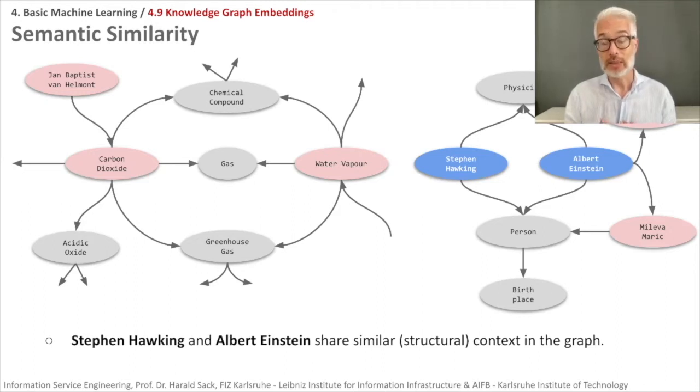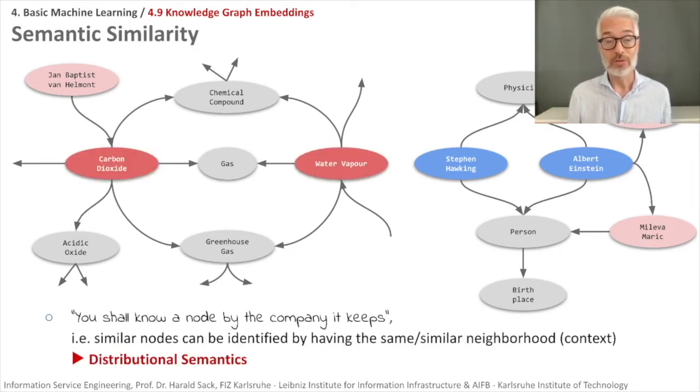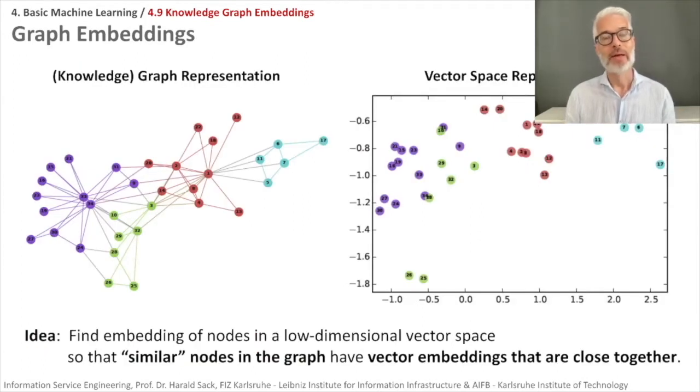You see, we can construct from the given context vectors. This is exactly the same principle as you already know from word vectors, where we said you shall know a word by the company it keeps. You can also say you shall know a node by the company it keeps, which means the structural context. Similar nodes can be identified by having the same similar neighborhood, which means the same context. This is our principle of distributional semantics.